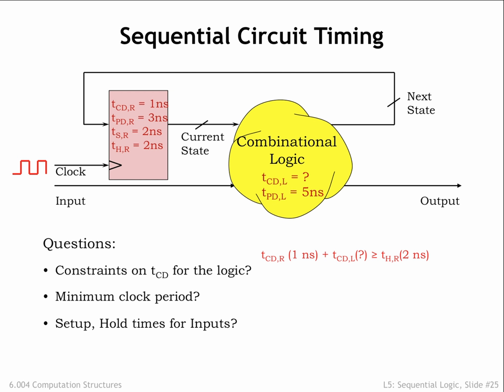We know that the sum of the register and logic contamination delays has to be greater than or equal to the hold time of the register. Using the timing parameters we do know, along with a little arithmetic, tells us that the contamination delay of the logic has to be at least 1 nanosecond.